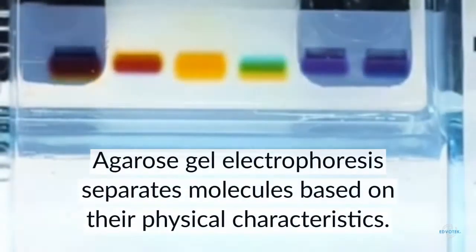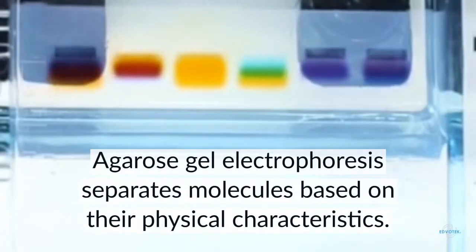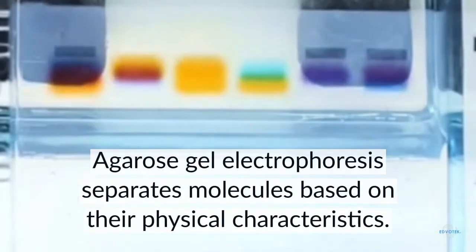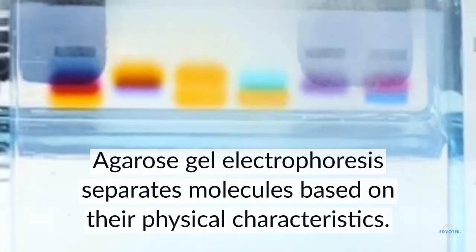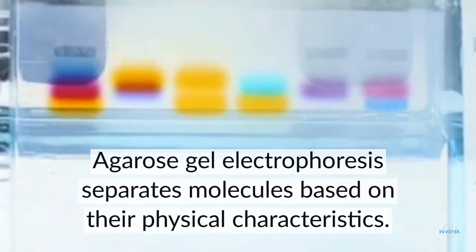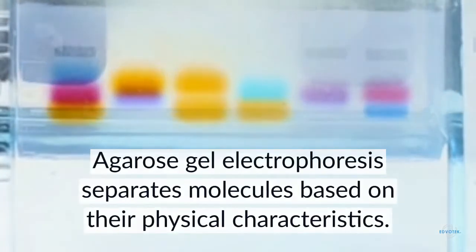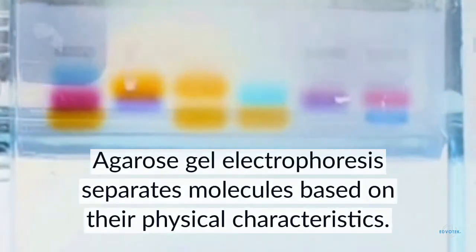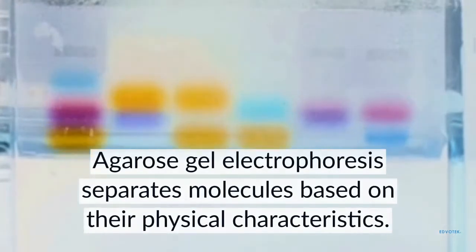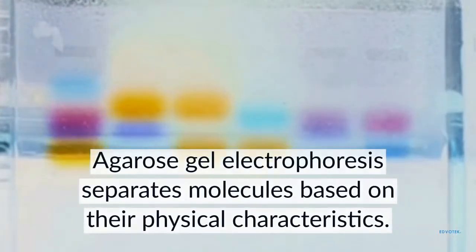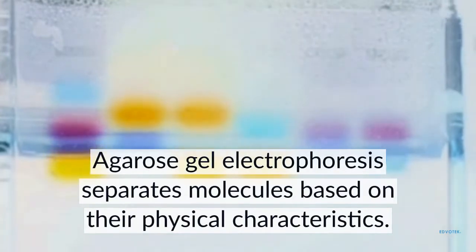Agarose gel electrophoresis separates molecules based on their physical characteristics. It uses electricity and a porous gel matrix to separate different molecules — dyes, nucleic acids, and proteins — into discrete zones based on their physical properties.